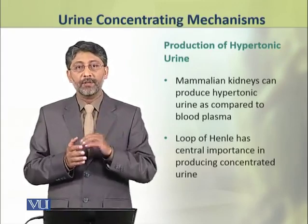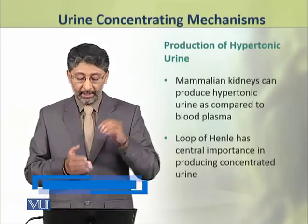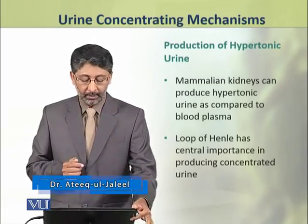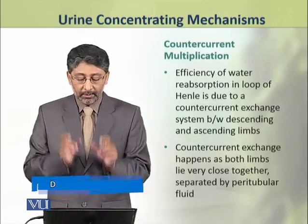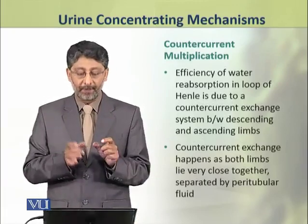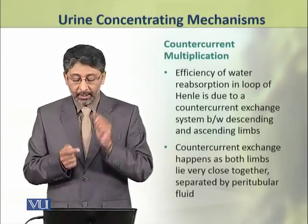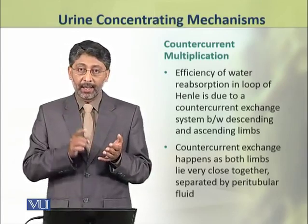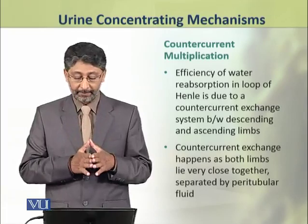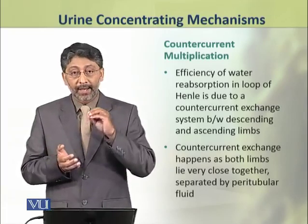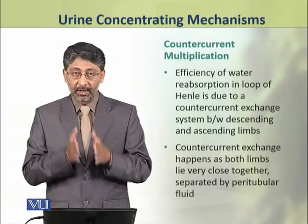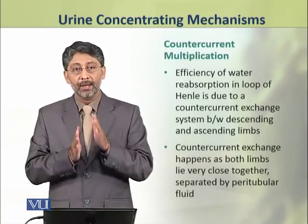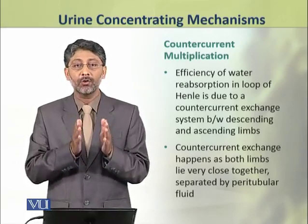This is because of the presence of the loop of Henle, which has central importance in producing concentrated urine. The efficiency of water reabsorption in the loop of Henle is due to a counter-current exchange system between the ascending and descending limbs. This counter-current exchange happens because both limbs lie very close to each other and are separated by a peritubular fluid.